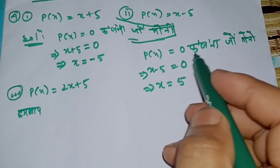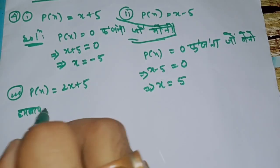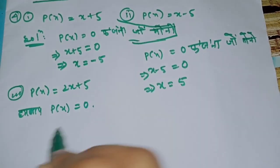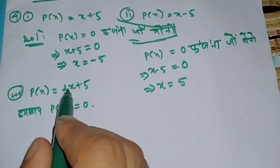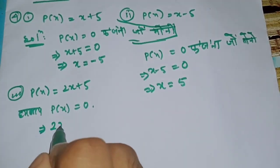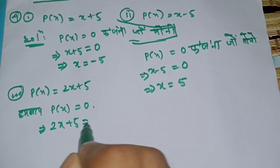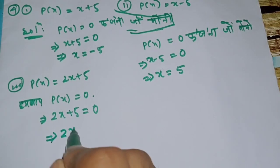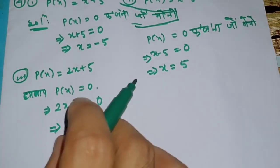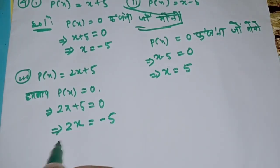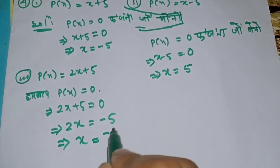F is equal to 0. Now F plus F is equal to 0. F plus something is equal to 0. If 2x plus 5, we remind 2x. Step 1 is equal to minus 5.